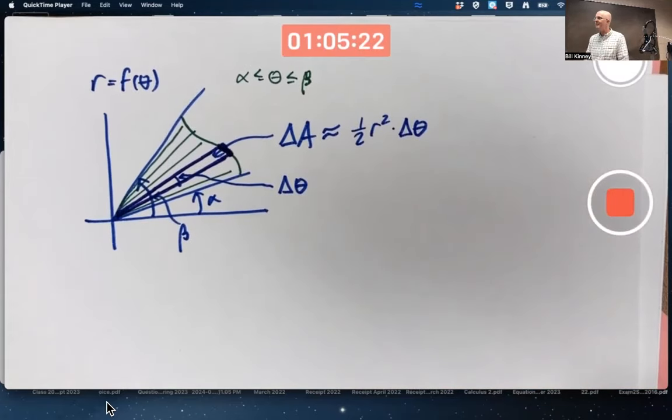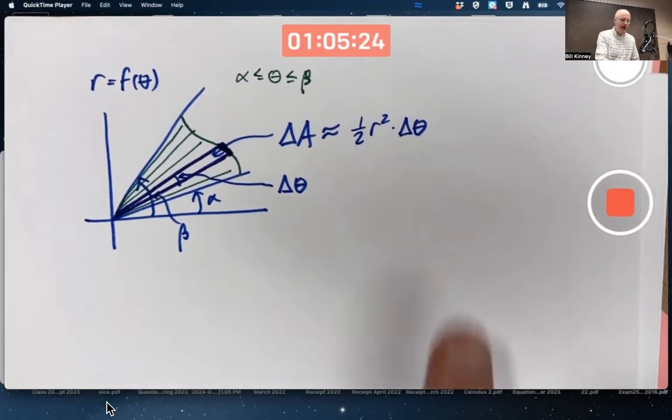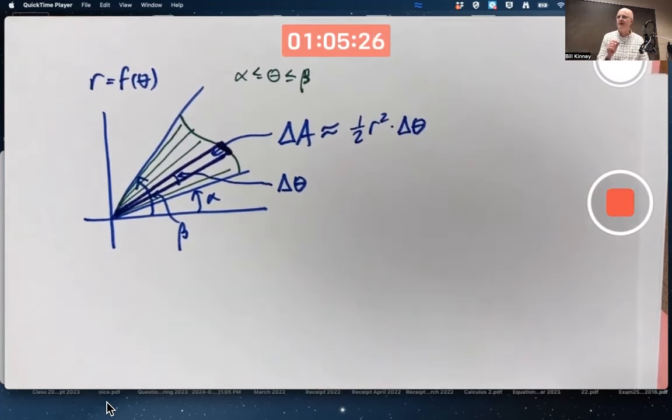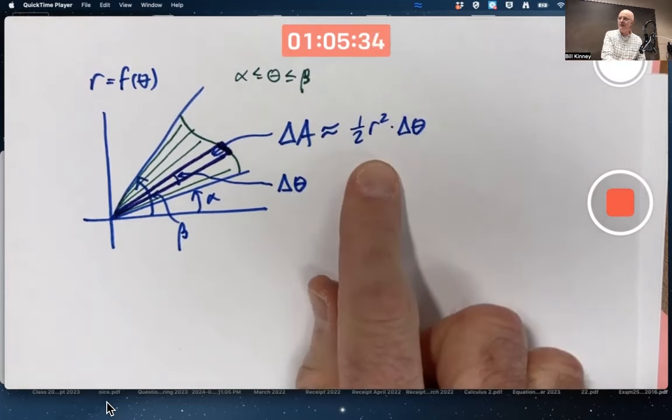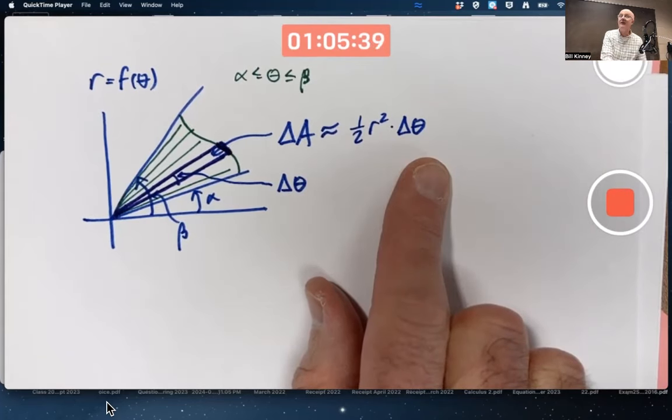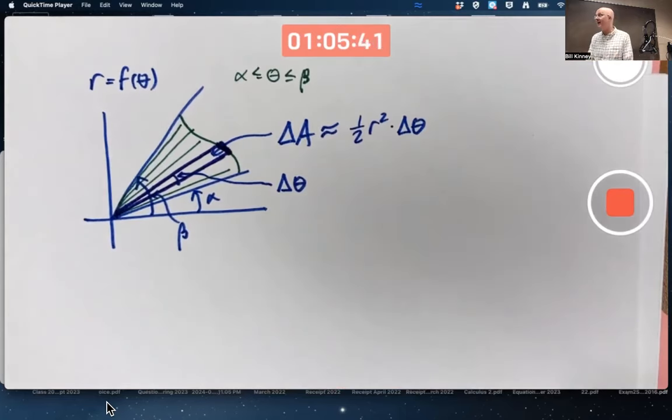Where does that come from? I'm imagining delta theta to be a small angle, but what if it were a big angle? What if it were the entire way around a circle, 2 pi? This formula would give you one half times R squared times 2 pi. The twos would cancel, giving you pi R squared, area of a circle radius R.